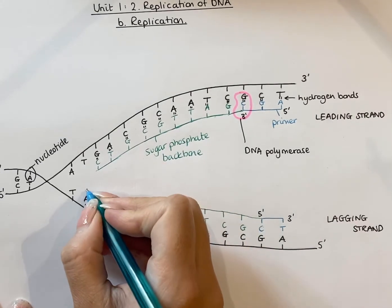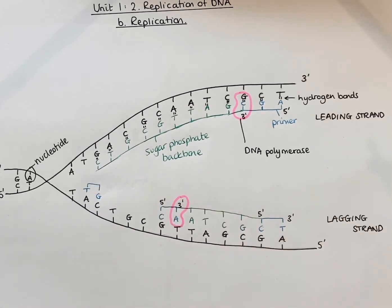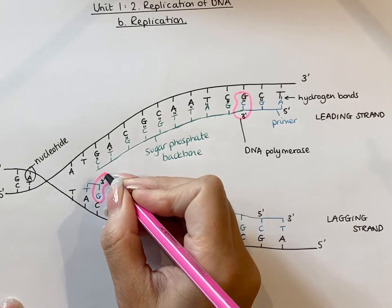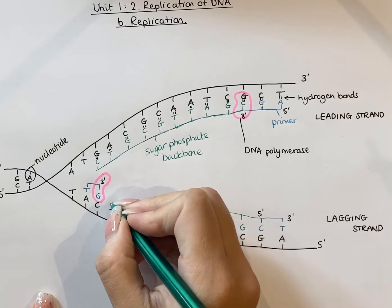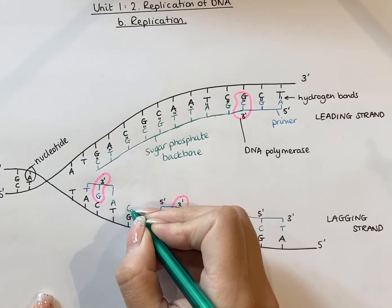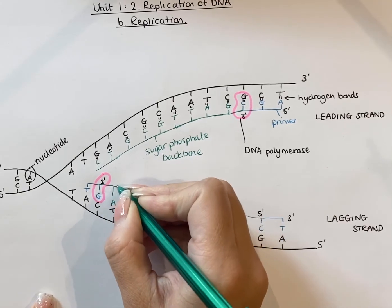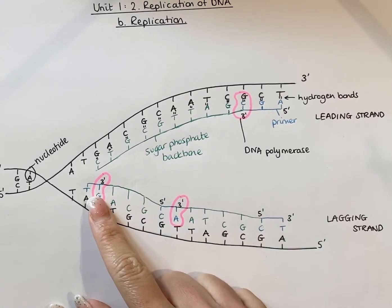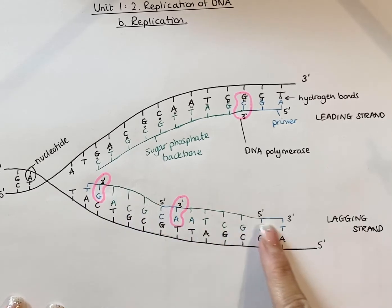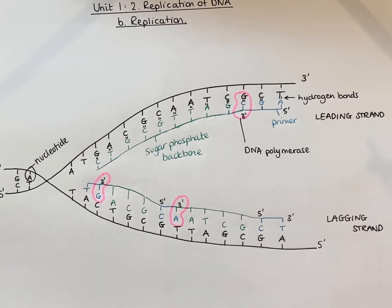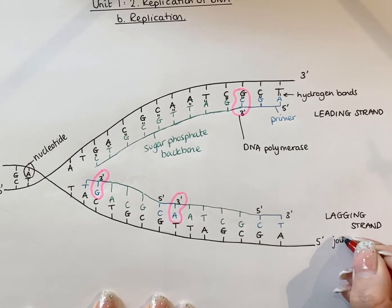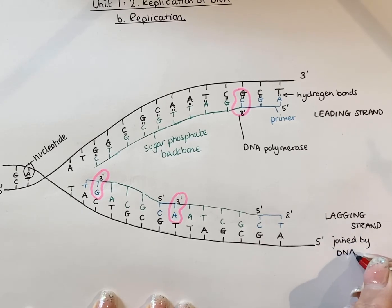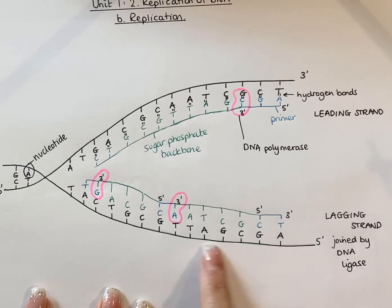Then we'd have to get another primer in here and do the same thing again. If this is the 3' end, we get DNA polymerase to come in again and add nucleotides — adenine in here, then cytosine and guanine — and those nucleotides are joined using a sugar phosphate backbone again. Because this strand is replicated in fragments, we need to zip it all up and seal it together. The enzyme that does that is called DNA ligase, which joins those fragments together.